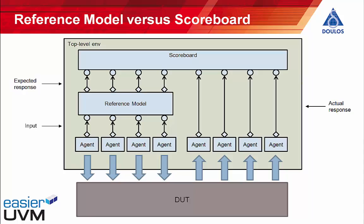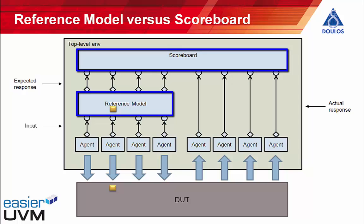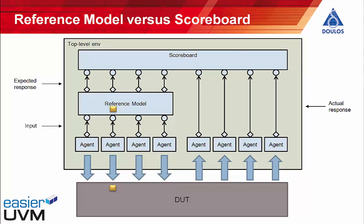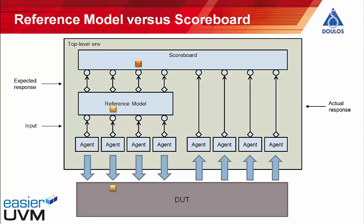Let's look at how the reference model and scoreboard work by considering what happens when our input agents generate stimulus. An agent generates stimulus for the design under test, and the monitor within the agent sends an analysis transaction to the UVM verification environment, which is sent to the reference model. All components above the level of the agent are untimed, so the reference model can immediately calculate the expected output and send the corresponding transaction to the scoreboard. In this example the design under test is a 4x4 crossbar switch, so the reference model has four inputs and four outputs. Each transaction arriving on an input is decoded and, depending on its address, sent through the appropriate output to the scoreboard.